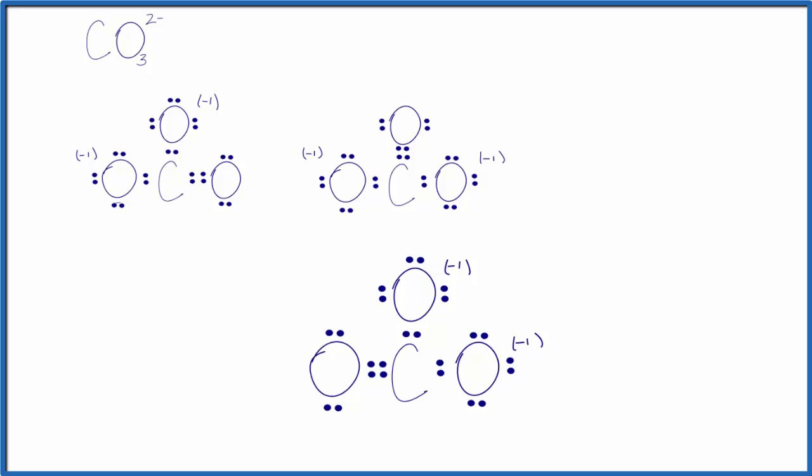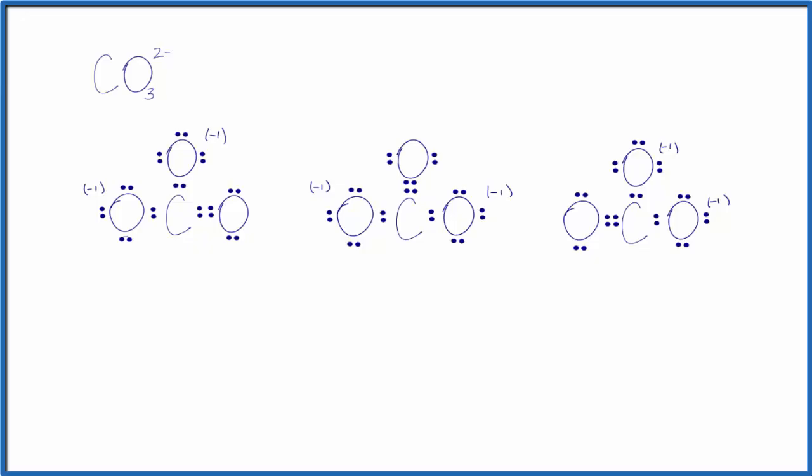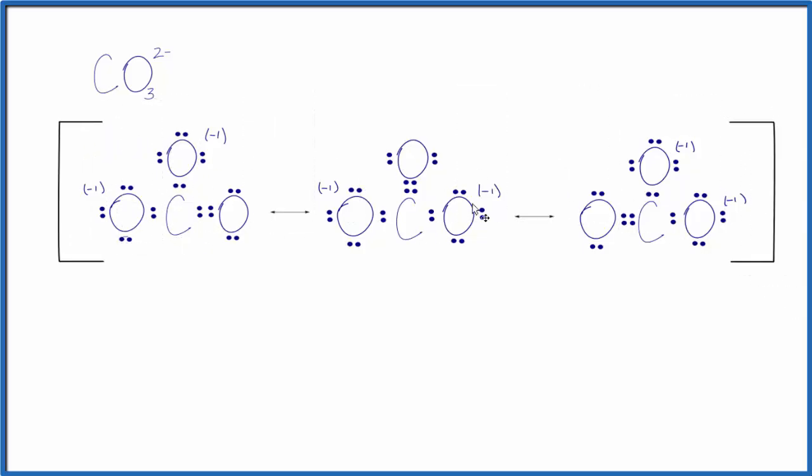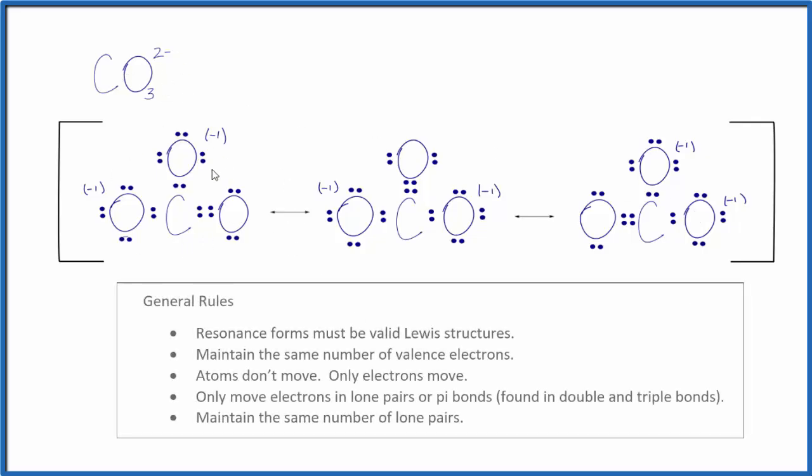So this is another resonance structure we can draw for the carbonate ion. We should put these arrows between resonance structures, as is convention, and we should put brackets around the resonance structures. So these are the three ways we could draw the resonance structures for CO3. Note that we have the same number of valence electrons in each structure. Everything has an octet. They're valid Lewis structures.